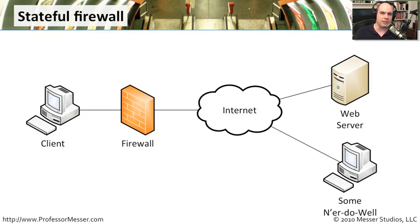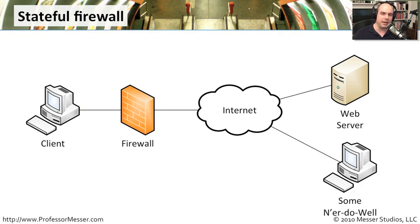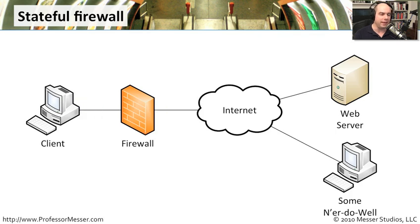One of the things we're always faced with when dealing with security on a network is protecting our machine from the bad guys, and to do that we use firewalls. The name comes from the device used to separate rooms in case of fire. Our client communicates back and forth to a web server on the internet, and because we've made that connection, our Windows Firewall is stateful — it recognizes the request and allows the response back into the client machine.